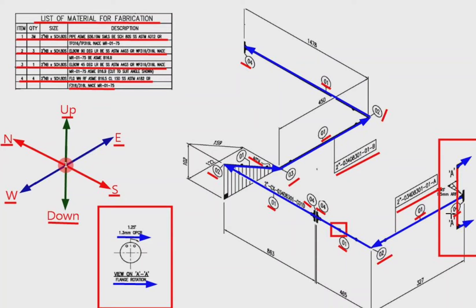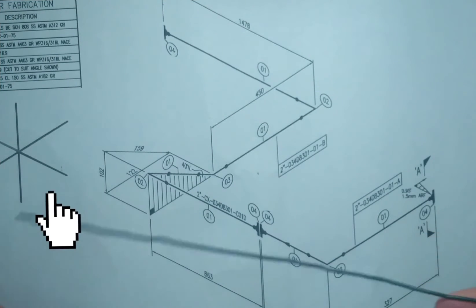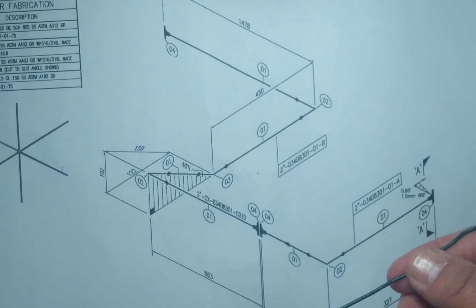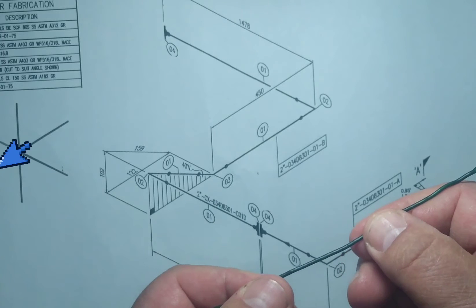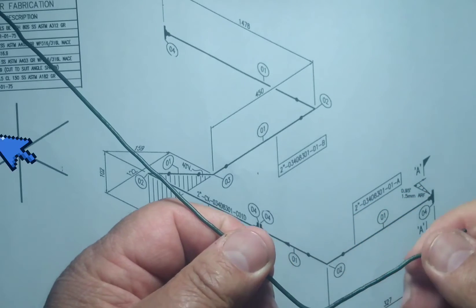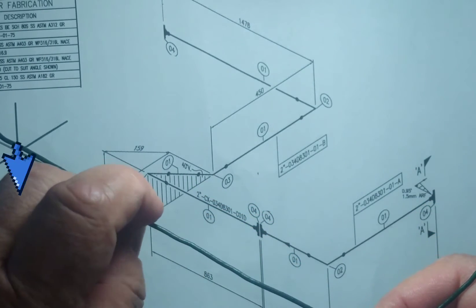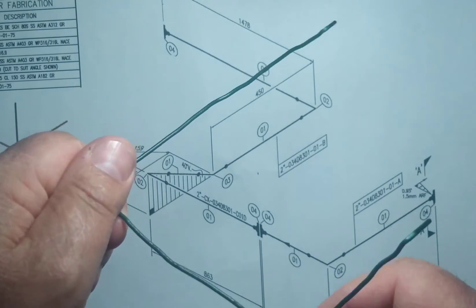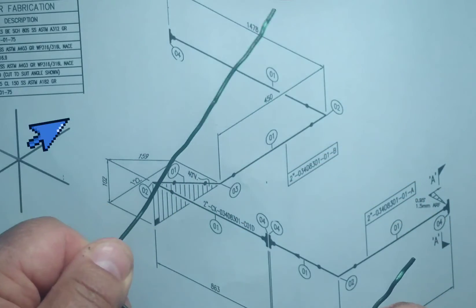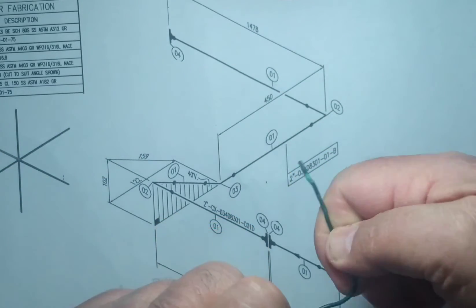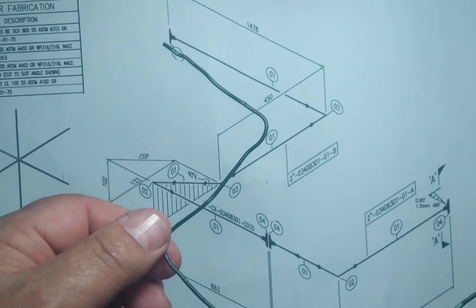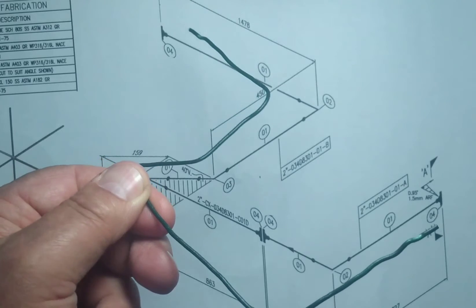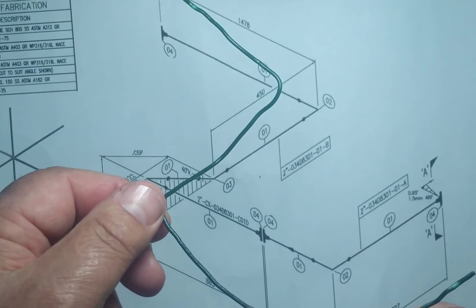Now let's bend the wire of this pipe drawing. This is our wire, the sketch showing these directions, and this is the pipe isometric drawing. With the help of this sketch, let's bend the wire of the pipeline. Since the pipeline is traveling to the west direction, we hold the wire in the west direction. Then the wire is bent first to the north, then bending down and then to the east.